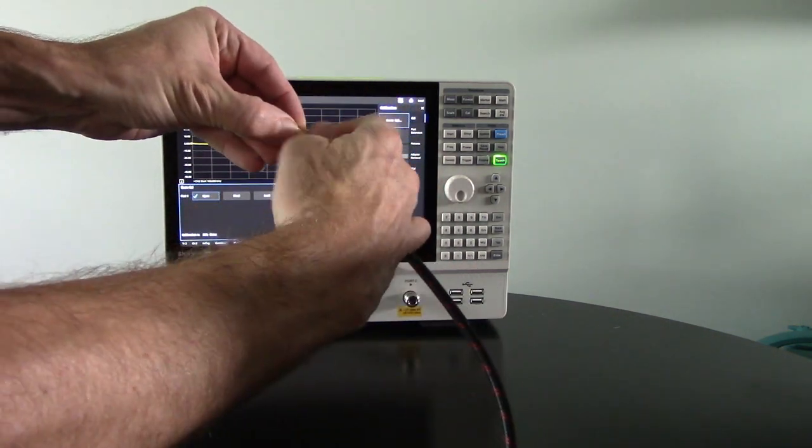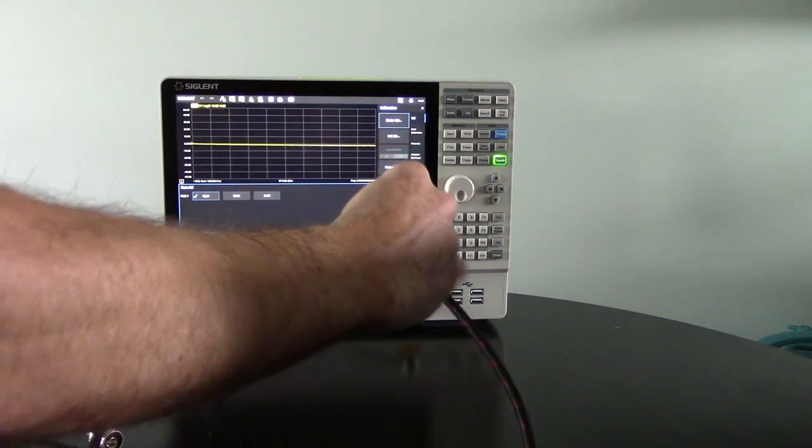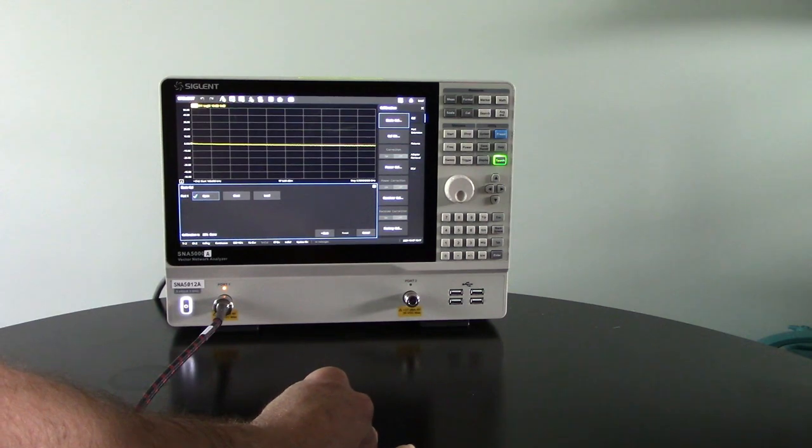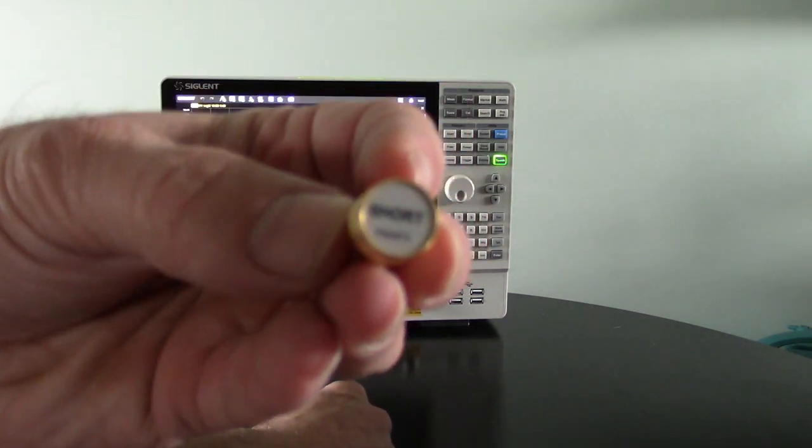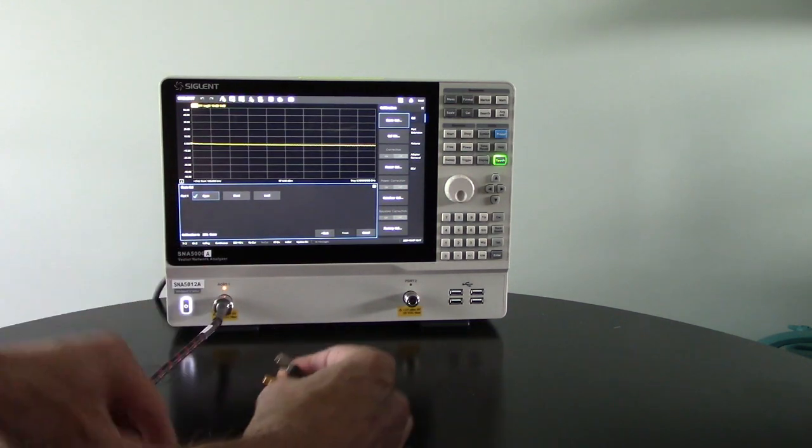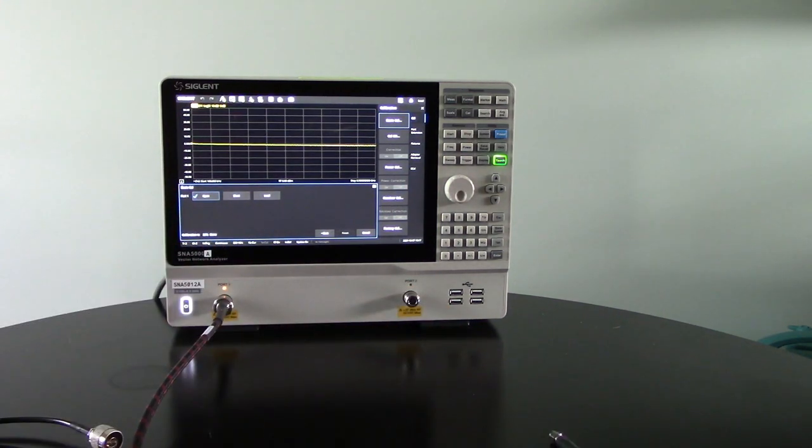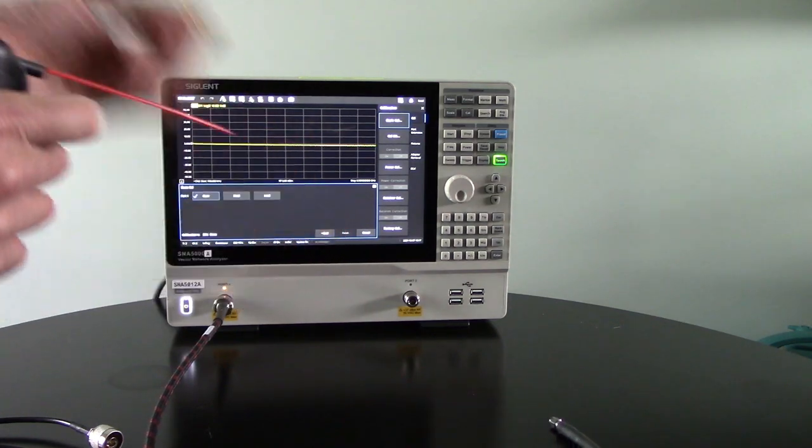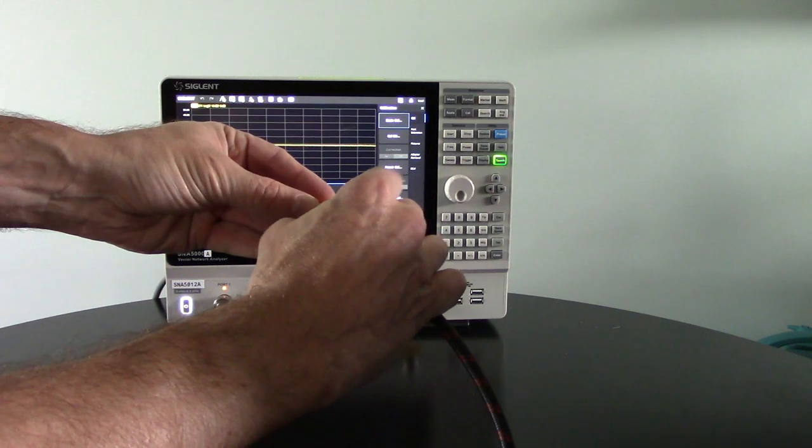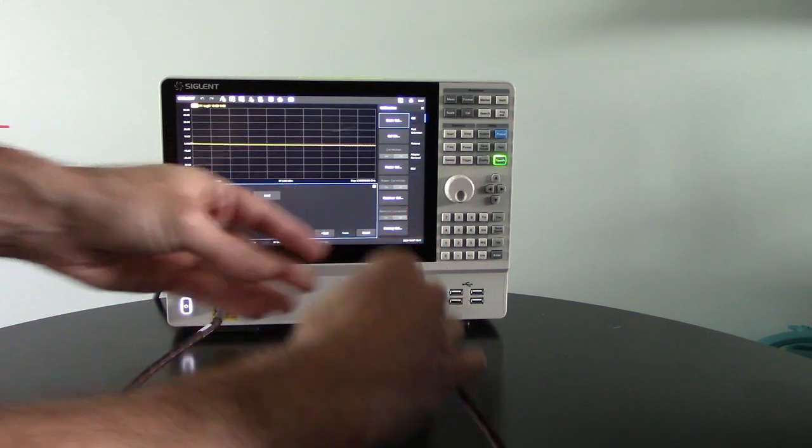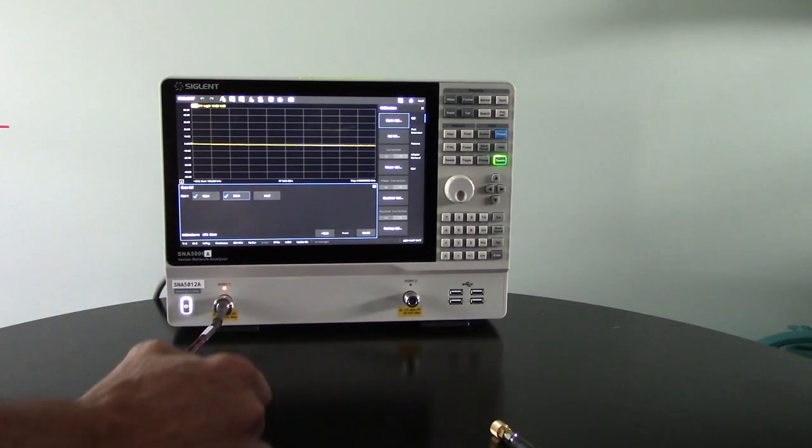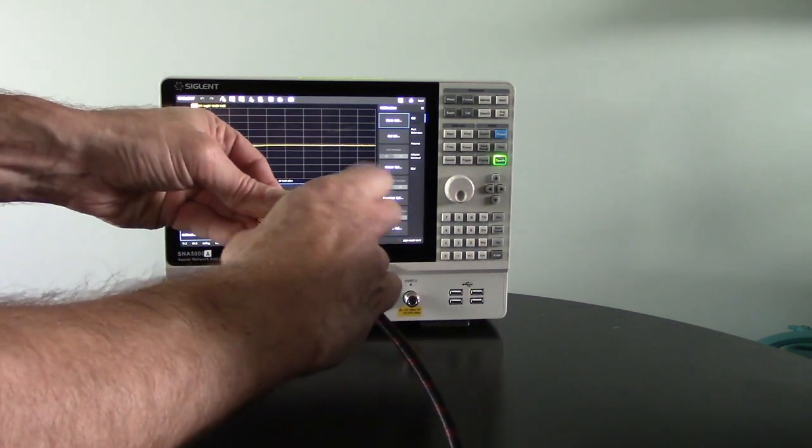Once that calibration is complete, we will unscrew the barrel, remove the calibration element and we're going to move to the short. Here we are with the short and we're going to pull its cap off and give it a quick shot with our compressed air. We will then connect onto the cable, again we're spinning the barrel and tightening. And we're going to then press that open button and we're going to have that calibration saved.